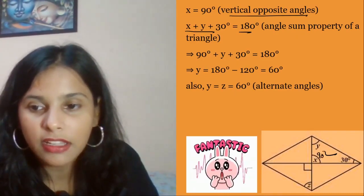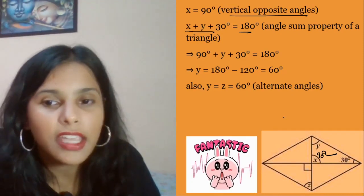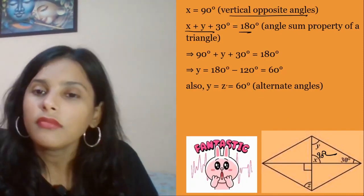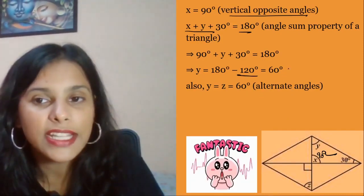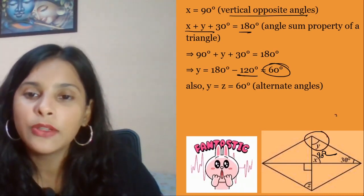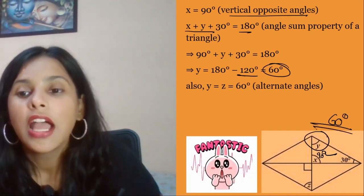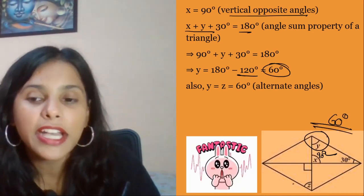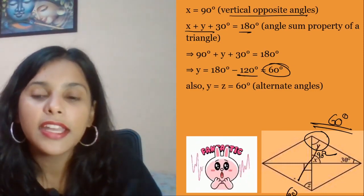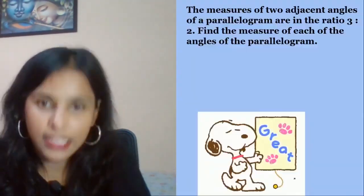So x plus y plus 30 equals 180. We already know x value is 90, so 90 plus 30 is 120. Now 180 minus 120 is 60, so y value is 60 degrees. Now y value is 60, so z will be 60 because these are alternate angles.